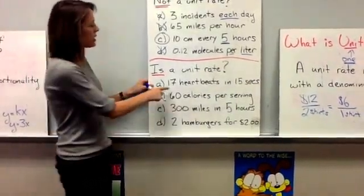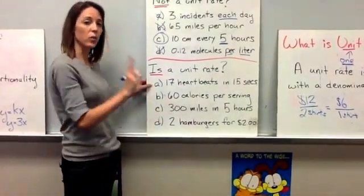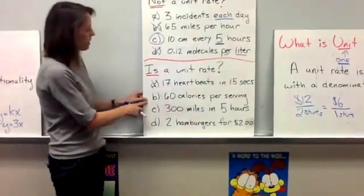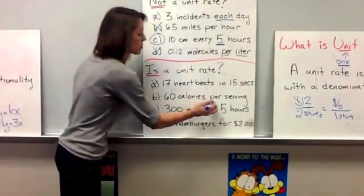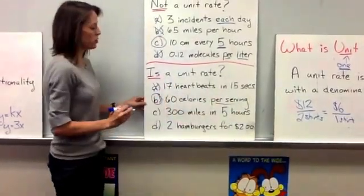So this first one, 17 heartbeats in 15 seconds. In order to be a unit rate, it would have to be in one second. So this one is not a unit rate. B says 60 calories per serving. So per serving means one serving. So this one is a unit rate.